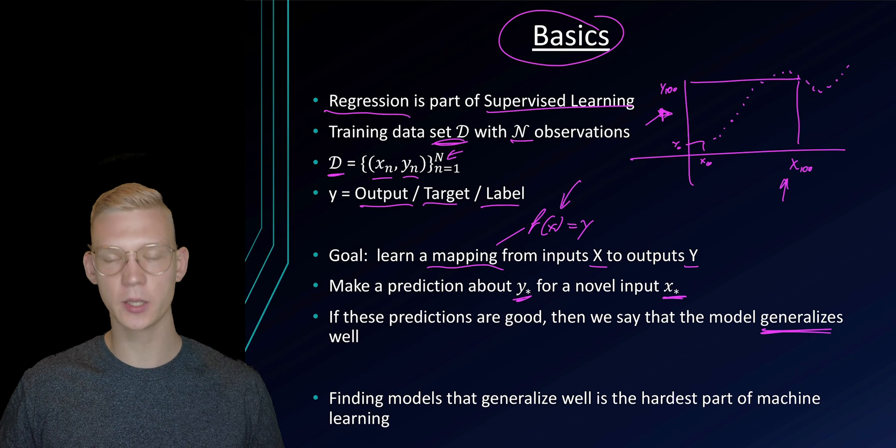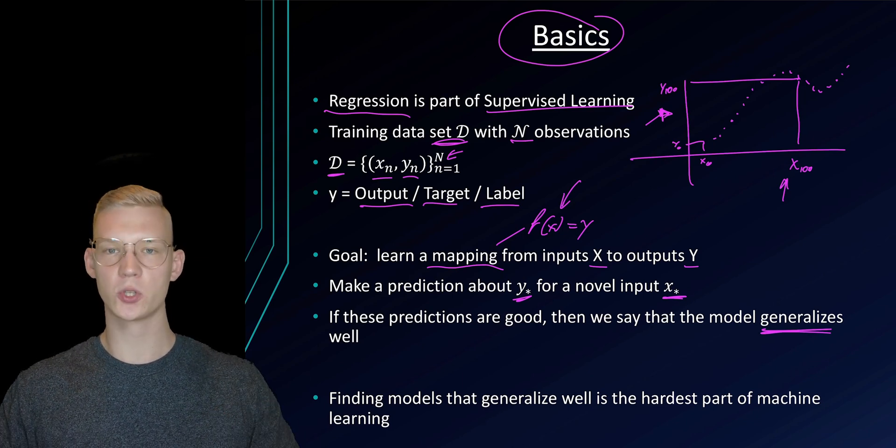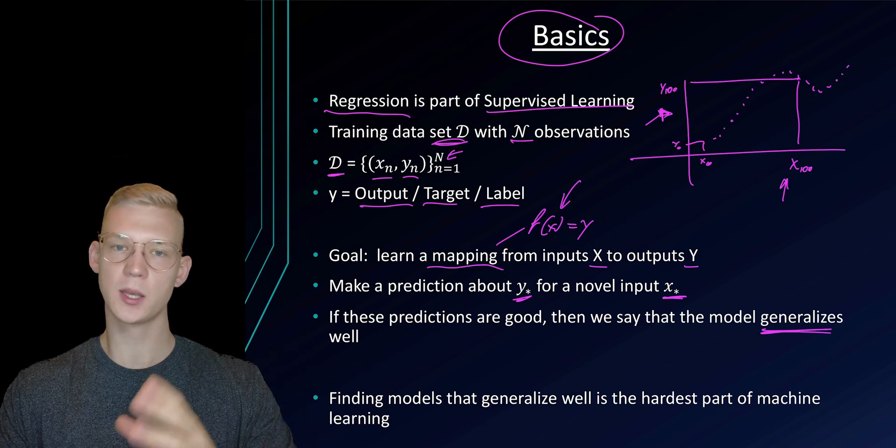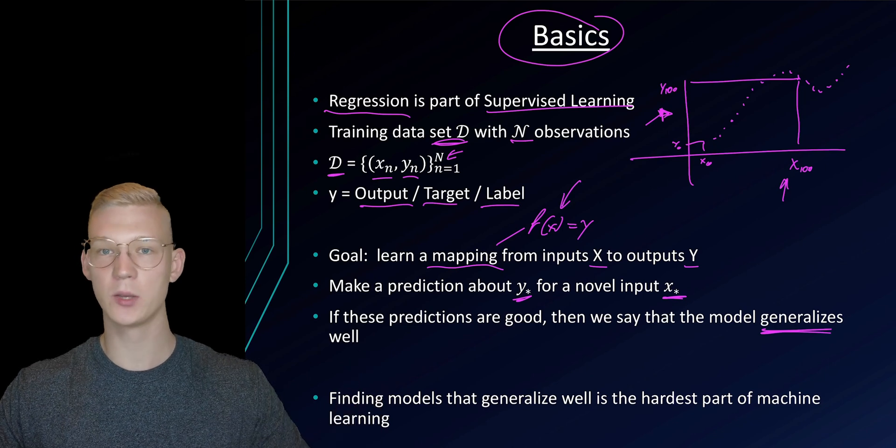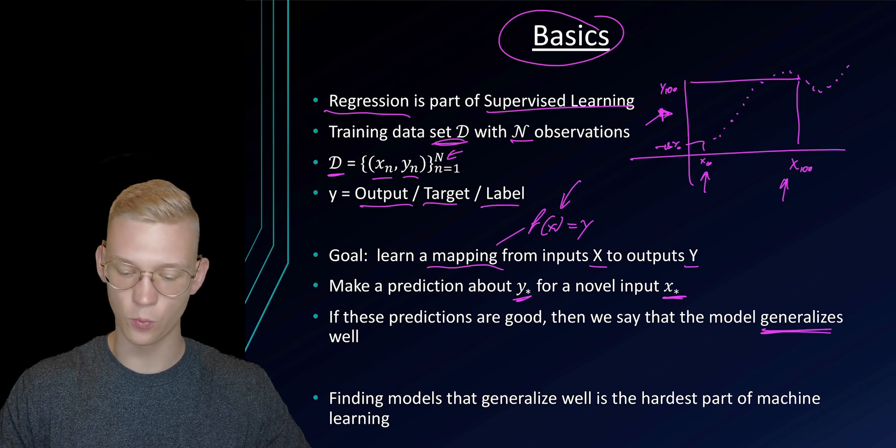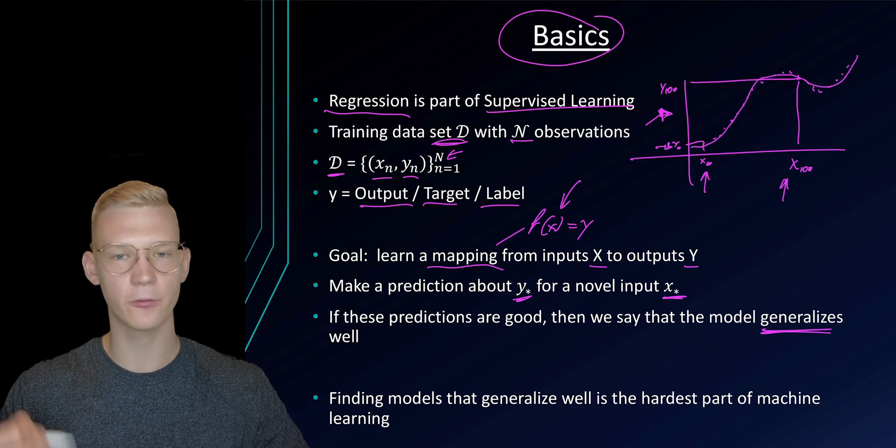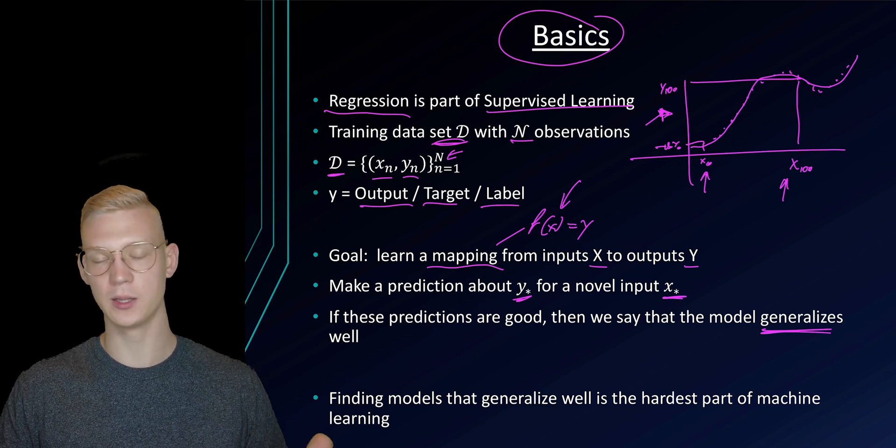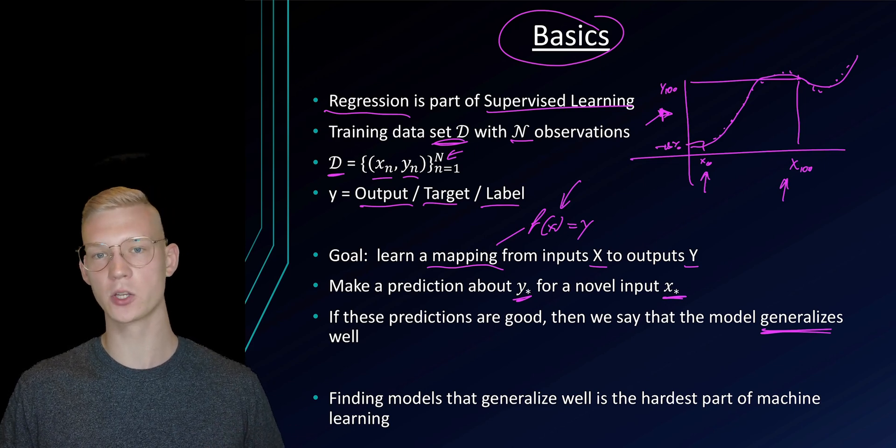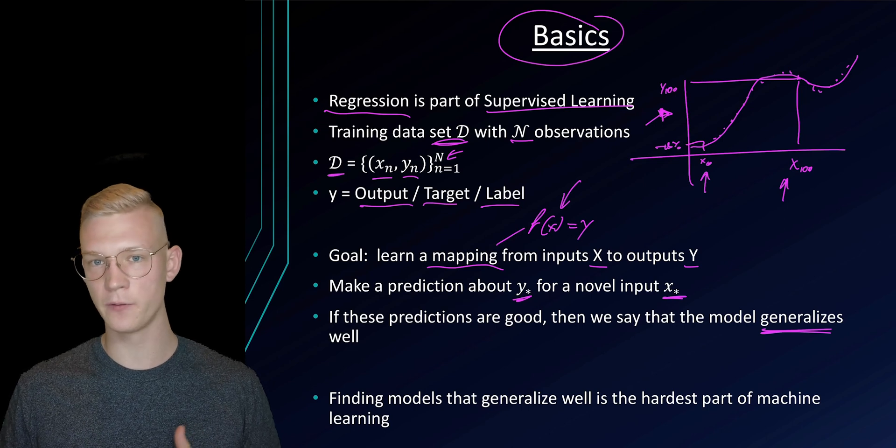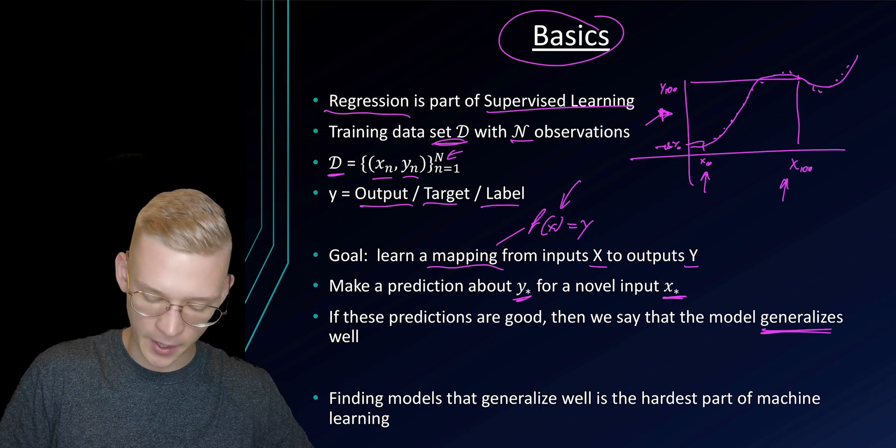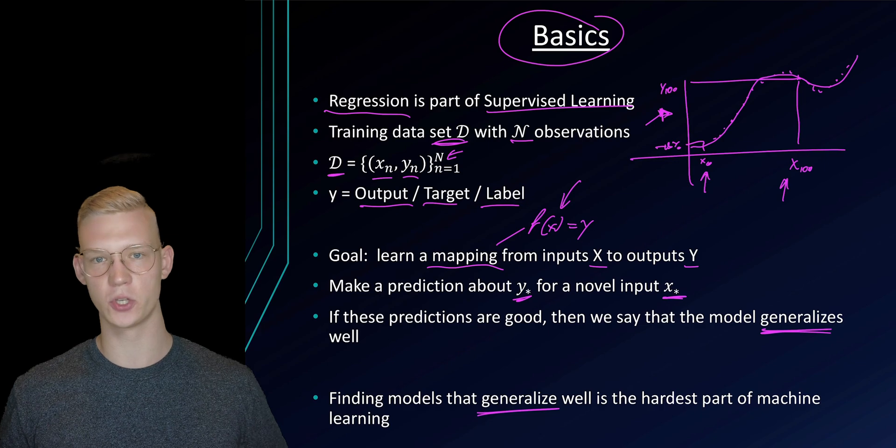So we say that the model generalizes well. In machine learning every model or the models are very capable of just learning the inputs and outputs of our data set by heart. So it will just learn the output from x₀ to y₀ and from x₁₀₀ to y₁₀₀. It will not learn the underlying function that is generating the output or the label. And this is what is very difficult to solve in machine learning—to actually understand whether the model just learned the values by heart or did it learn the underlying structure that is behind those values. So finding a model that generalizes well is the hardest part in machine learning.